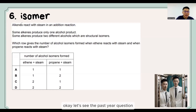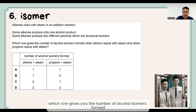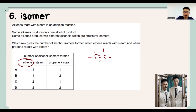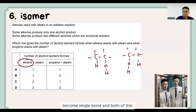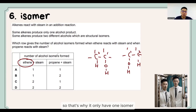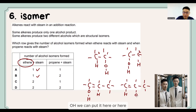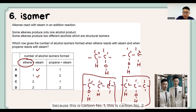Let's look at a past year question. Alkene reacts with steam in an addition reaction. Some alkenes produce only one alcohol; some produce two different alcohols. This asks for the number of alcohol isomers formed when ethene reacts with steam and when propene reacts with steam. For ethene, the OH can only go on the first carbon — reading left to right or right to left gives the same result — so there is only 1 isomer. For propene, the OH can go on the first or second carbon, giving propan-1-ol and propan-2-ol, so we have 2 isomers. The answer is B.